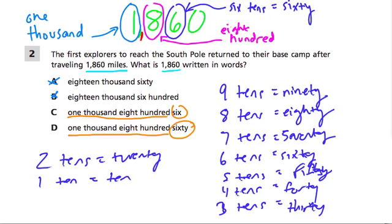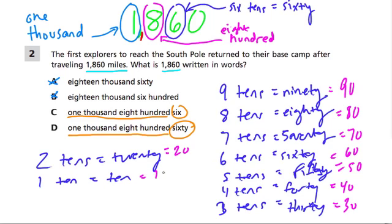And to really understand, let's write these numbers down. 9 tens is 90, looks like 9, 0. 8 tens is 80. 7 tens is 70. 6 tens is 60. 5 tens is 50. 4 tens is 40. 3 tens is 30. 2 tens is 20. And 1 tens is 10. And we have a 6, 0 here.